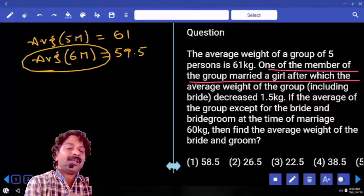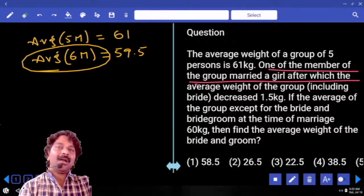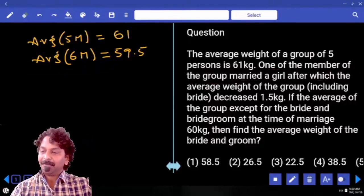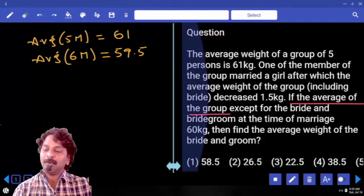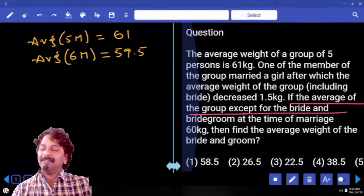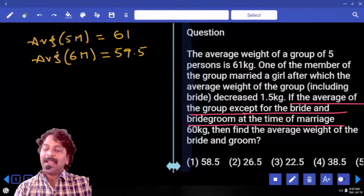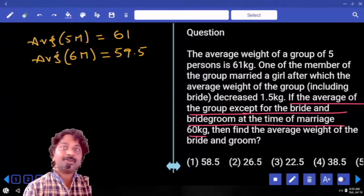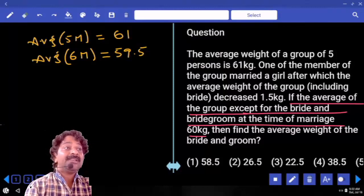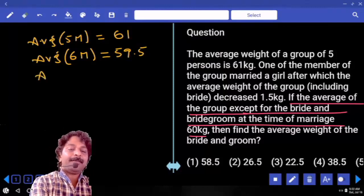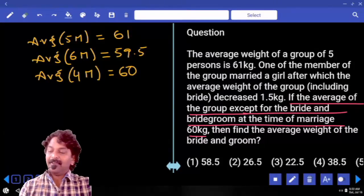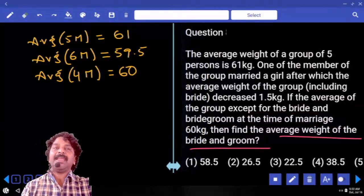This six members includes the couple. The average of the group except for the bride and bridegroom at the time of marriage is 60. That means we are excluding those two members out of 6 members. Now how many people are there? 4 people. Average for these 4 members is 60. Find the average weight of the bride and groom.